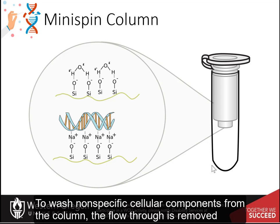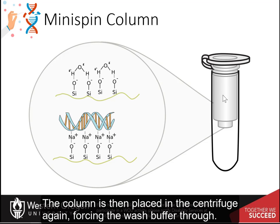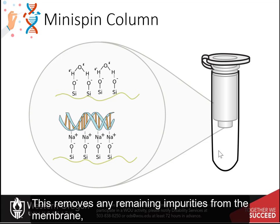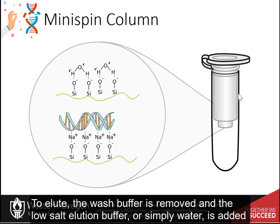To wash non-specific cellular components from the column, the flow-through is removed and a wash buffer is added to the column. The column is then placed in the centrifuge again, forcing the wash buffer through. This removes any remaining impurities from the membrane, leaving only the nucleic acid bound to the column.